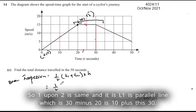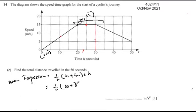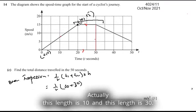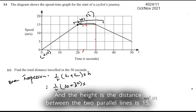One upon two is the same. l1 is the smaller line, which is 30 minus 20, which is 10, plus this length of 30. So this length is 10 and this length is 30. And the height is the distance between the two parallel lines, which is 15.